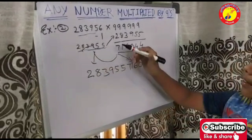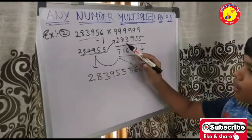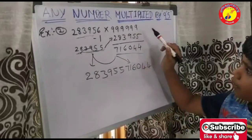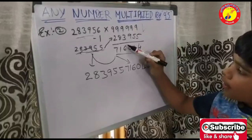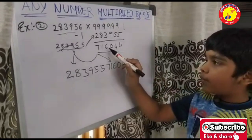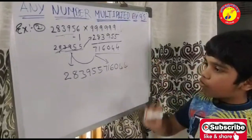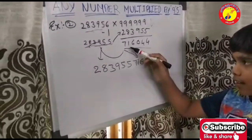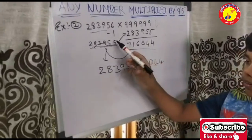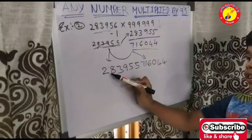Now, I will take number 2 here. Now, subtract this number from it. The answer is 716044. Now, I will take this number to here. This number to here. Now, this is the answer.